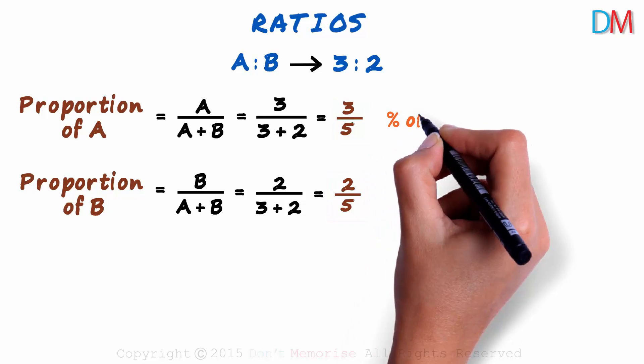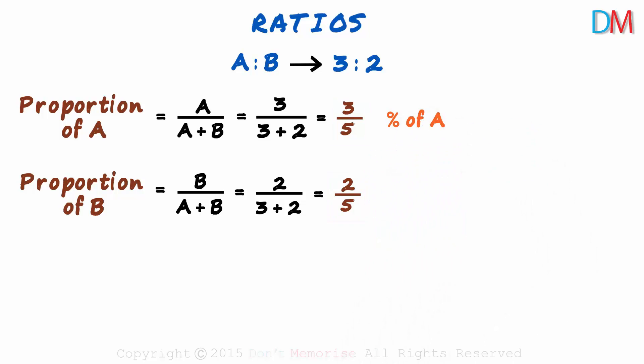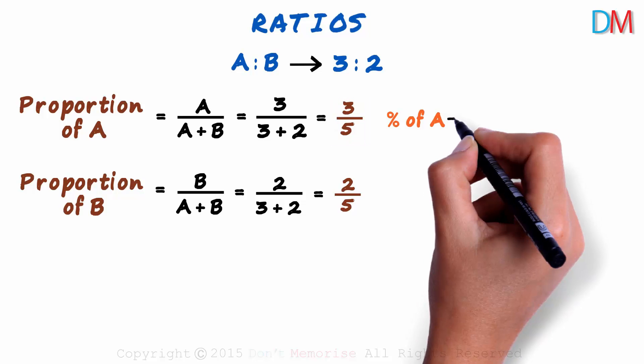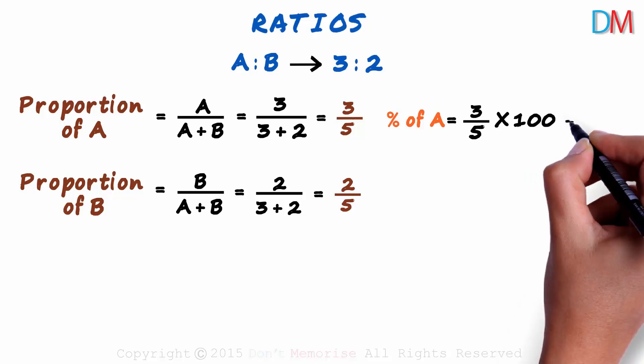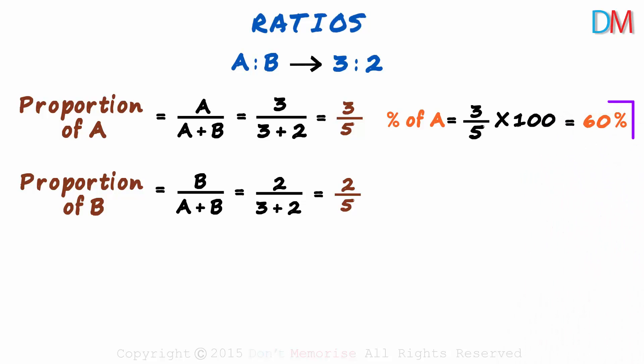What is the percentage of A in the mixture? When we are looking at the percentage, we want to find out what percentage of the entire quantity is A equal to. So it will just be the proportion of A in percentage terms. It will equal 3 over 5 times 100. That will be 60%. 60% of the entire mixture is A.